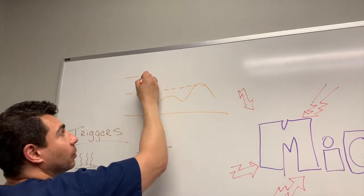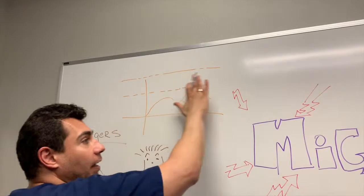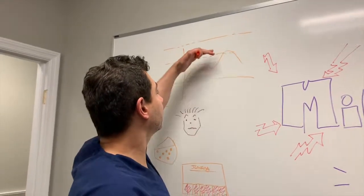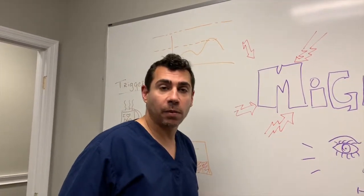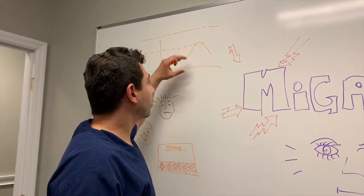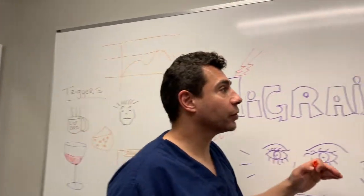A normal person might be up here. All of this can go by without having a migraine. But once they hit that threshold, then they can develop a migraine. Well, let's try to get those triggers down. But how can we improve those naturally?